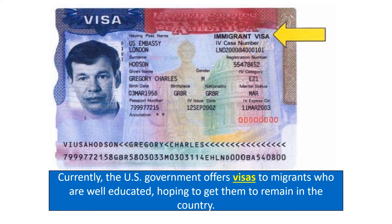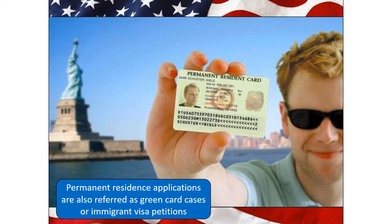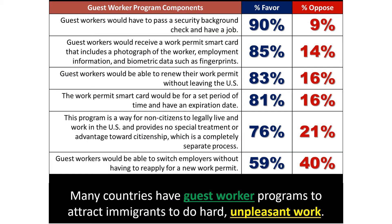Currently, the US government offers visas to well-educated migrants hoping to get them to remain. Permanent resident applications are also called green card cases or immigrant visa petitions. Many countries have guest worker programs to attract immigrants for hard, unpleasant work. In countries like the UAE, most guest workers are males aged 20 to 40 from India and Bangladesh. In France, most guest workers come from North Africa. Here in the US, most guest workers come from Mexico — geography determines which less-developed country is closest.